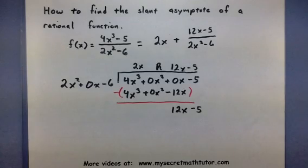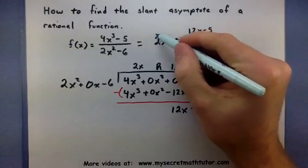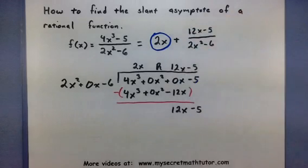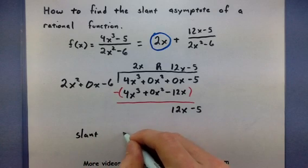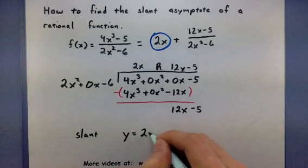This quotient part that we got, the 2x, this is where the slant asymptote is going to come from. In fact, I could say that the equation for the slant is y equals 2x.